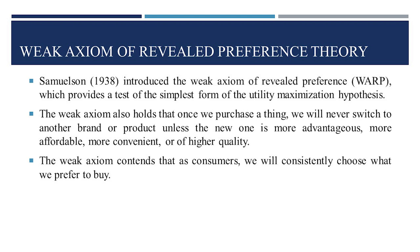WARP requires the revealed preference relation to be asymmetric. In other words, if a consumer persistently chooses bundle A over bundle B when both are available at the same prices, then the consumer will never reverse the preference even if the prices remain the same.